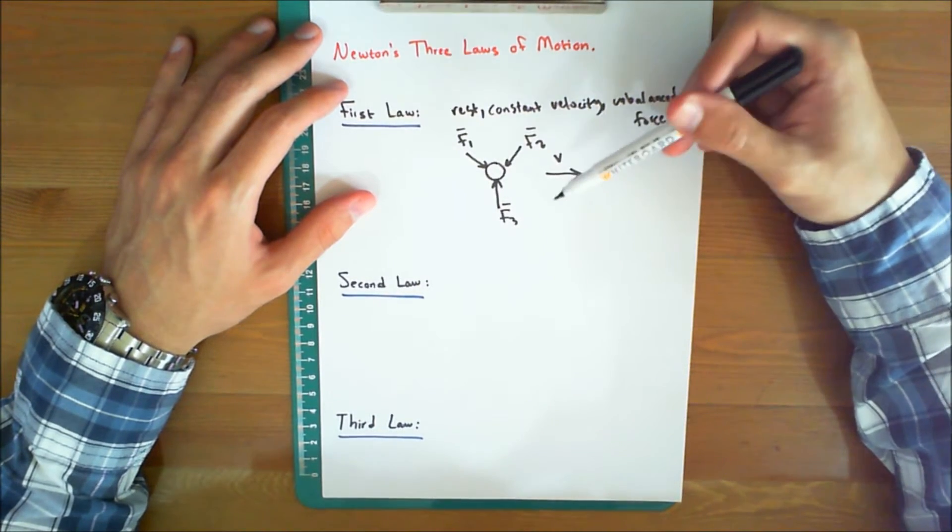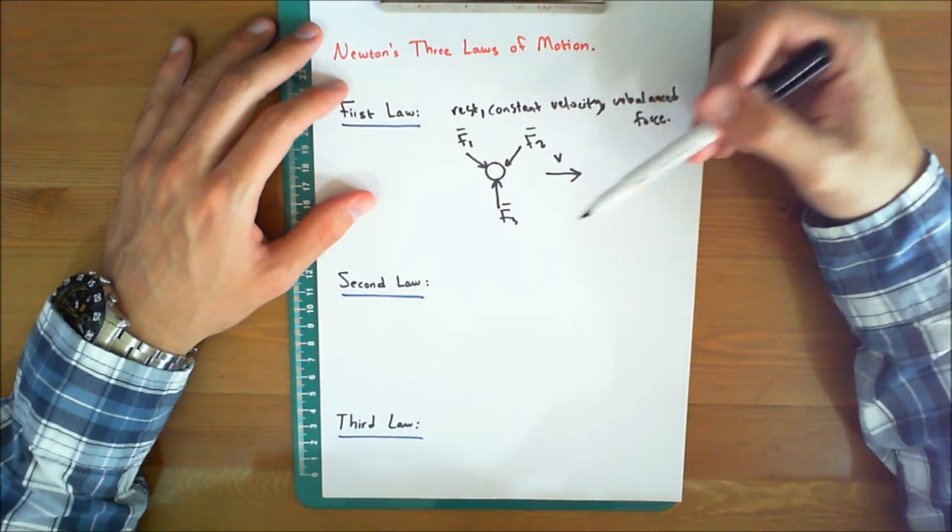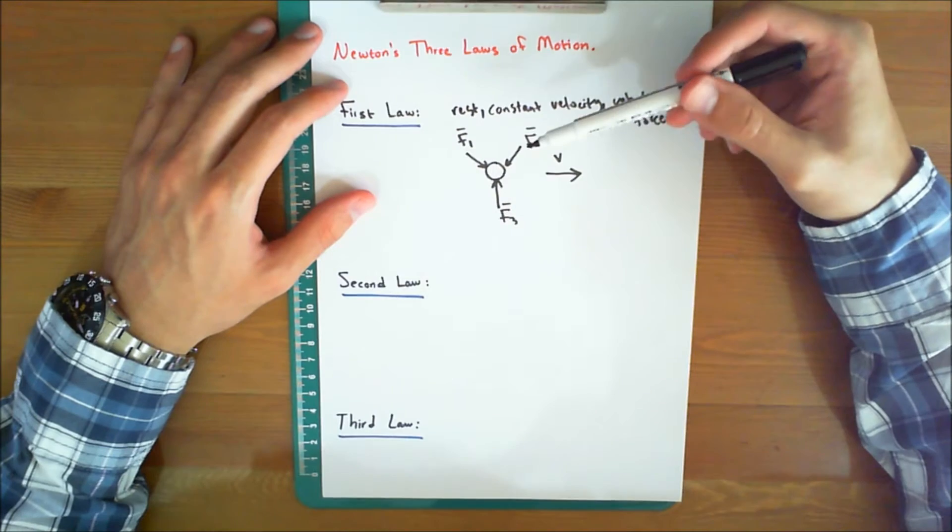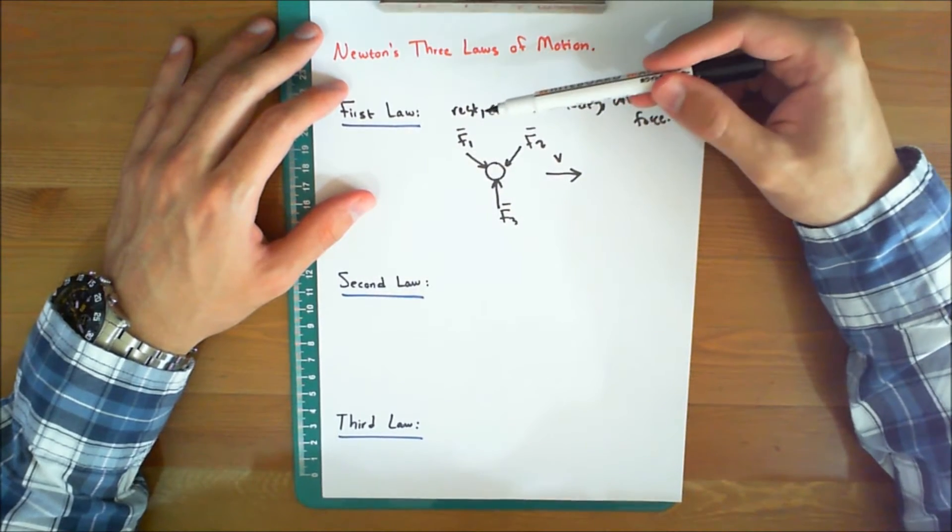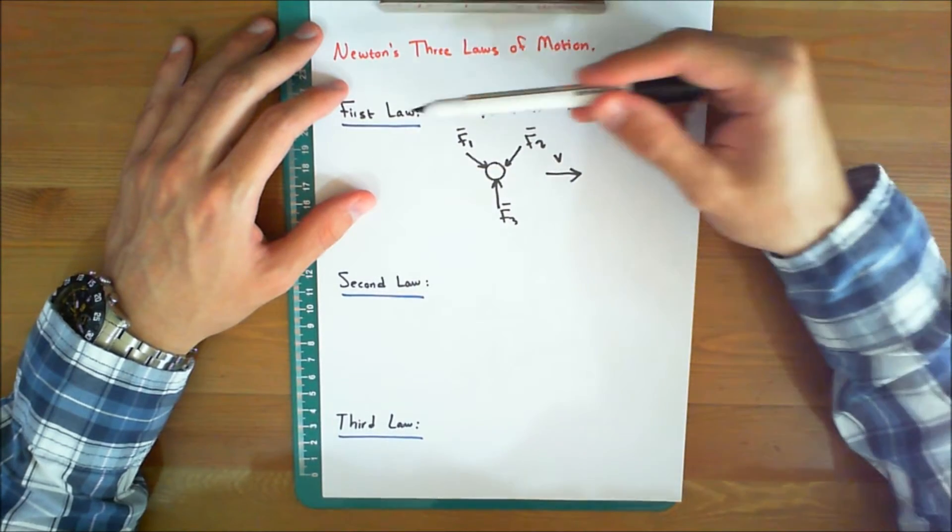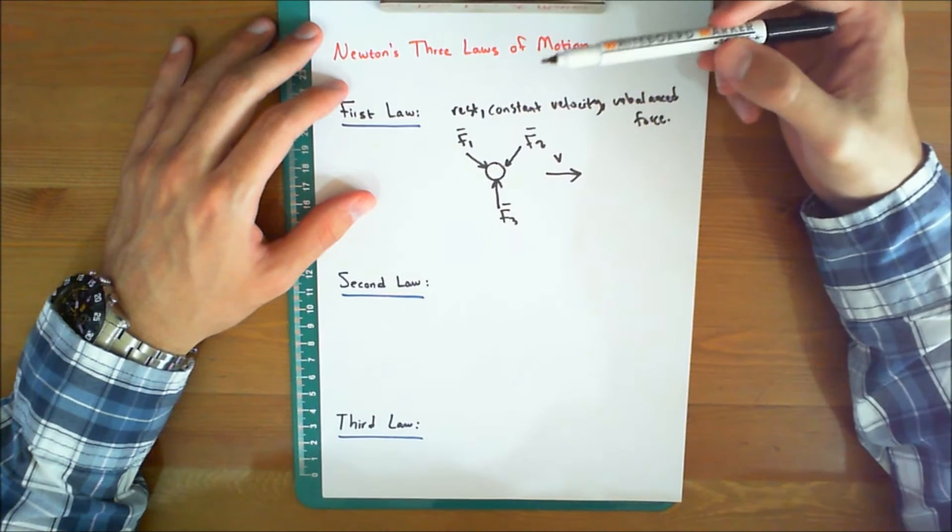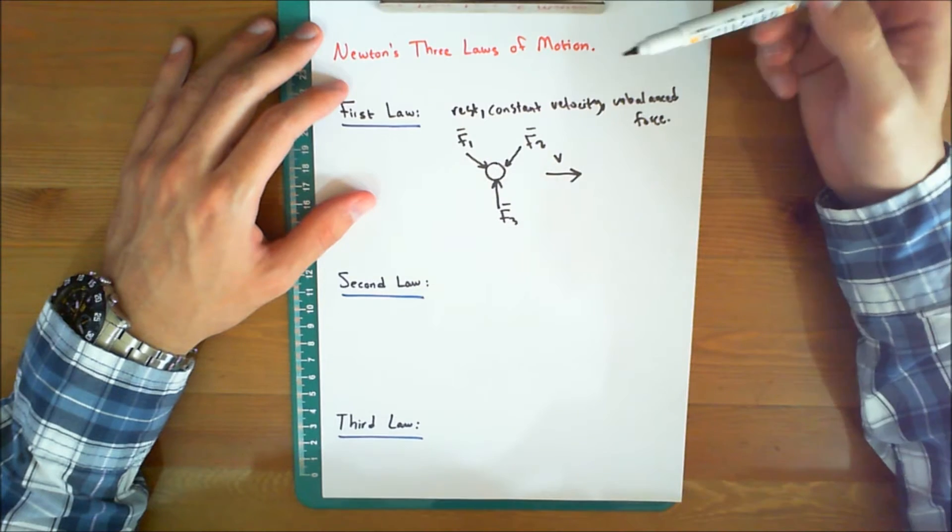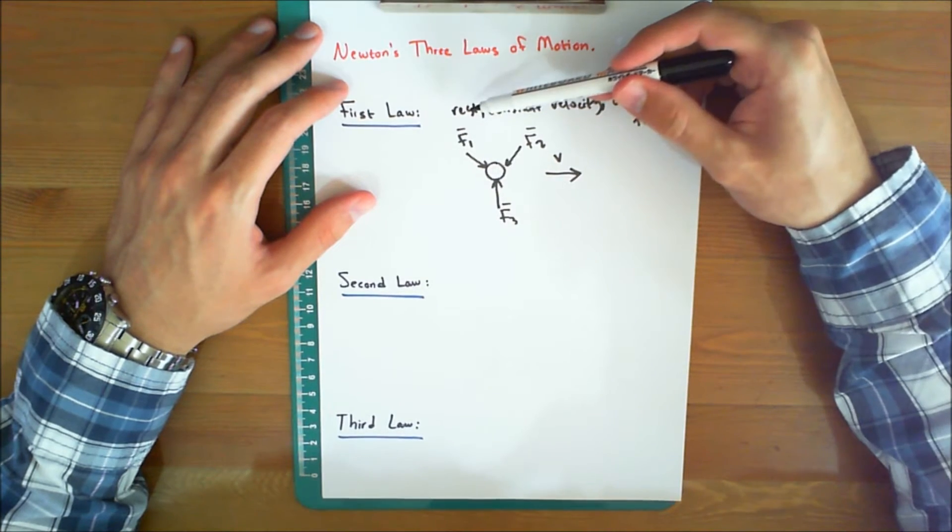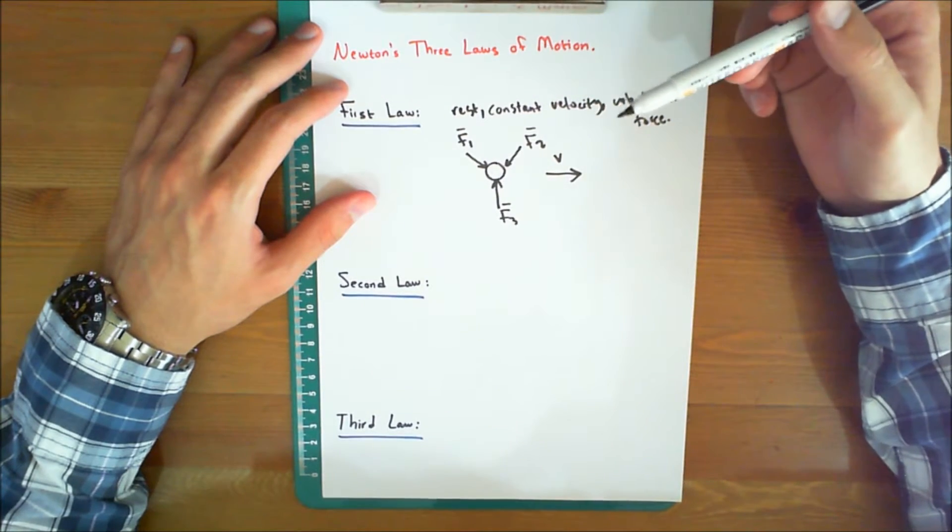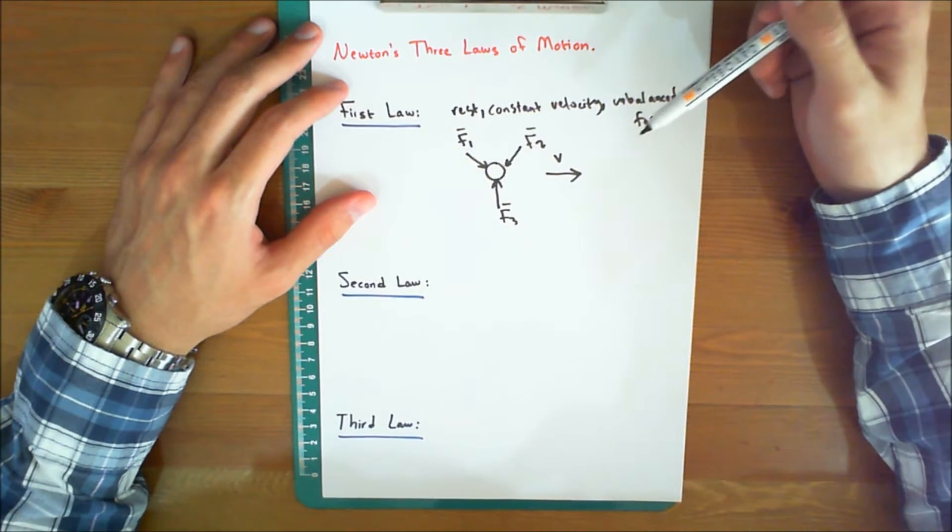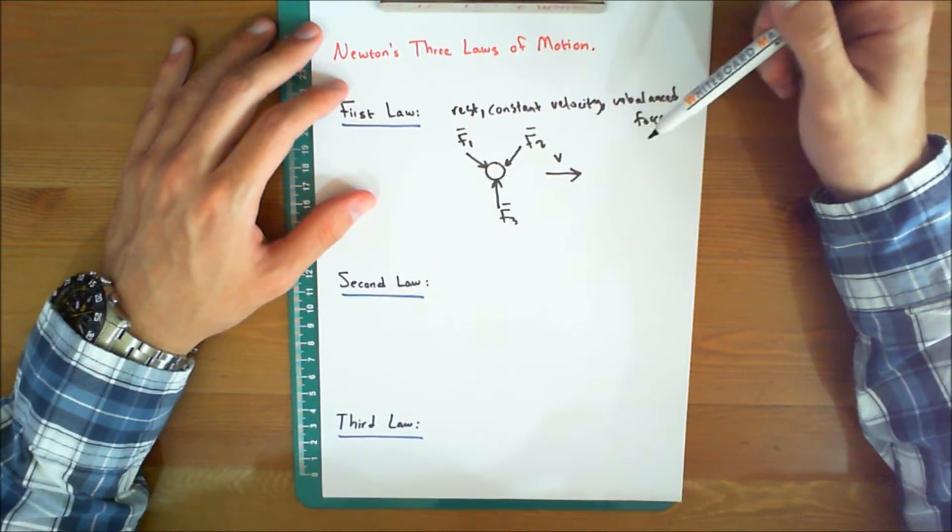Provided that the particle is not subjected to an unbalanced force. Now in order for you to remember the three laws, I suggest that you remember keywords related to each. So whenever you hear the first law, you must remember these three keywords: rest, constant velocity, and unbalanced force. Your particle originally at rest or moving in a straight line with constant velocity will remain in this state, provided that the particle is not subjected to an unbalanced force.